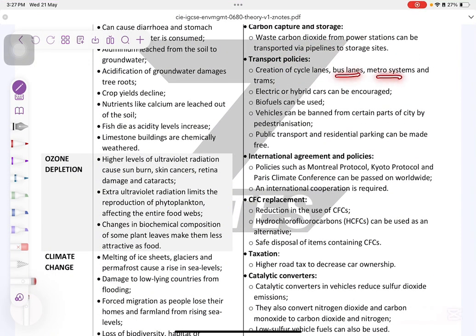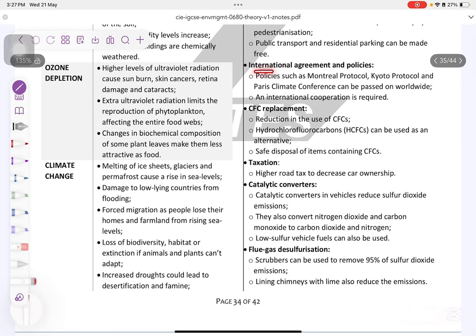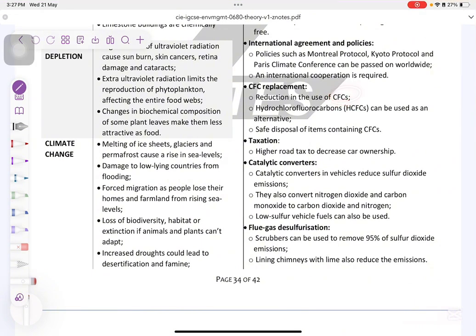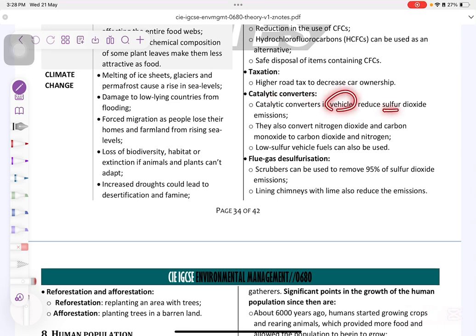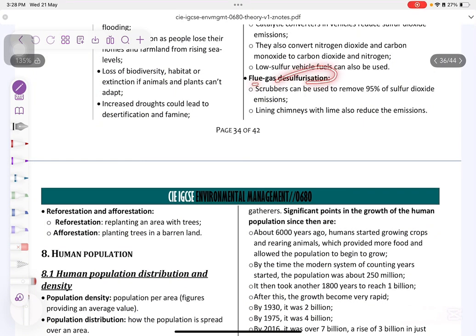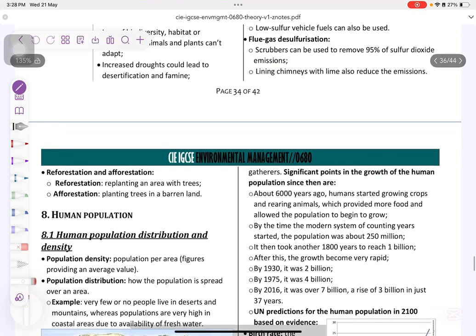Transport policies. They take care of the bus lanes, the metro systems, anything that will cause sharing of cars or carpooling. International agreements and policies. Why did we say international? Because when you say international agreement or global agreement, you have to say that there is no atmospheric borders. So the air keeps on moving from one country to another. So international cooperation is required in order to make a difference or a change globally. CFCs replacement: reduction of use of CFCs. And CFCs come from ACs and refrigerators. So make them more energy efficient. Safe disposal of items containing CFCs like refrigerators and ACs. Taxation: higher road tax to decrease car ownership. Catalytic converters in vehicle to reduce sulfur dioxide emissions. Flue gas desulfurization: there are scrubbers that are used to remove 95% of sulfur dioxide emissions, and they line the chimneys.